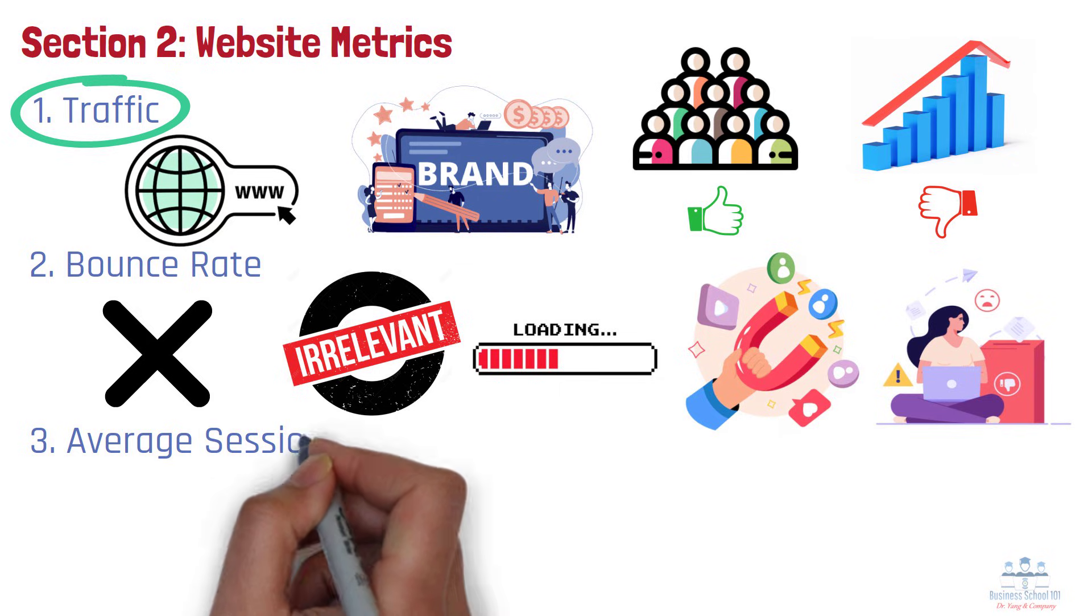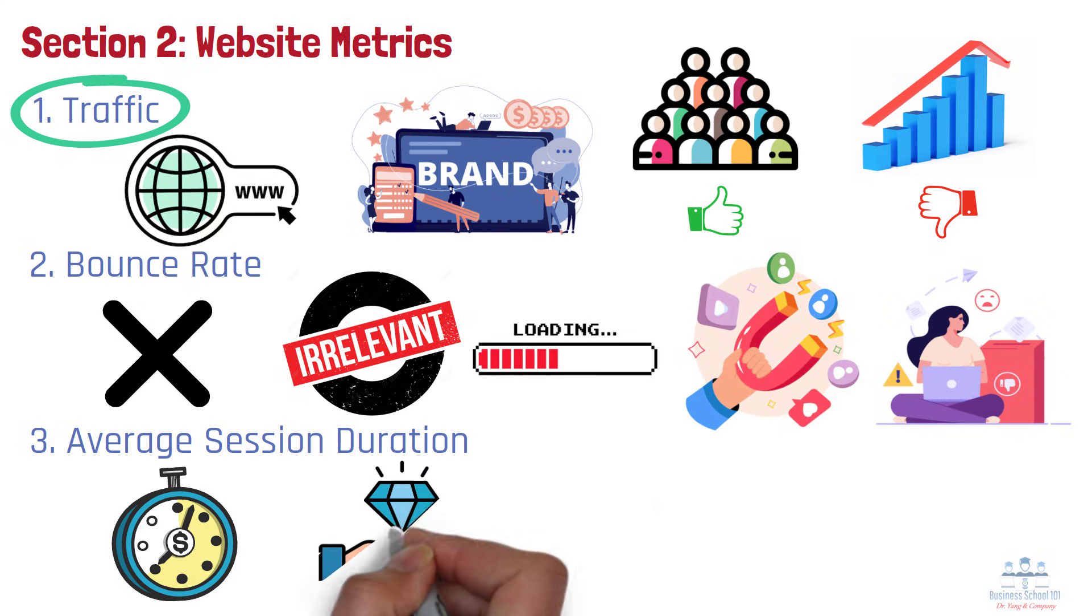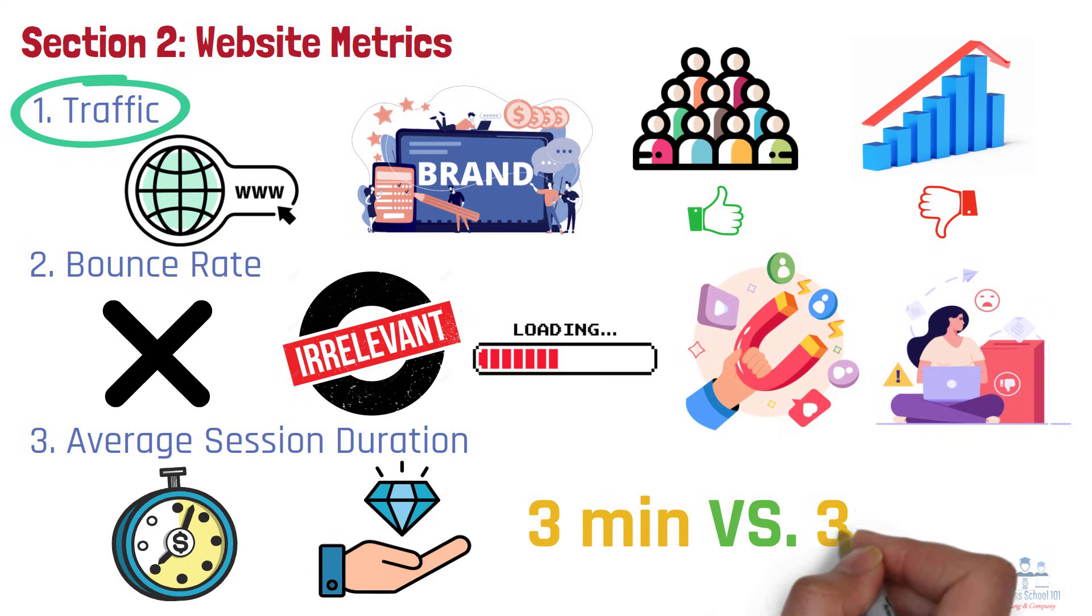Number 3. Average Session Duration. Average session duration tells you how much time users spend on your website per visit. Longer session durations typically indicate that users find your content valuable. For example, an average session length of 3 minutes versus 30 seconds can dramatically influence your ad spend decisions, SEO strategies, and content planning.